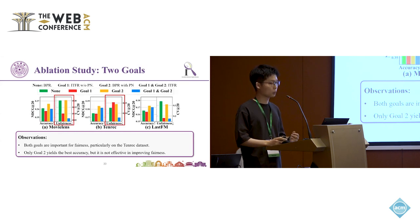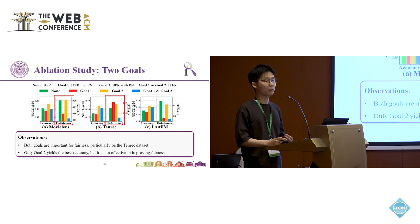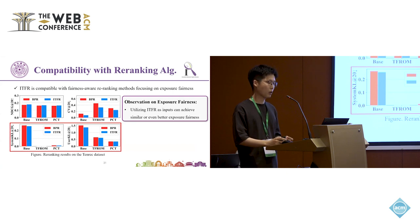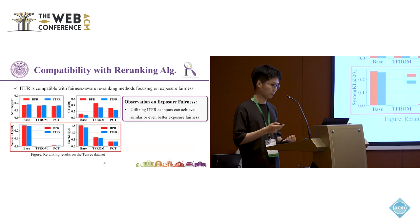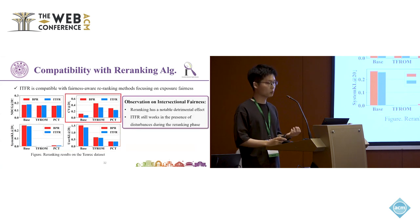We further conduct an ablation study on the two fairness scores. As shown in the figure, we can find that both scores are important for fairness, especially on the Tenrec dataset. Besides, using only the first goal shows the best accuracy but is not effective in improving fairness. As our method is applied to the ranking stage, we next verify its compatibility with fairness-aware re-ranking methods focusing on exposure fairness. As shown in the figure, using our method as input can achieve similar or even better exposure fairness than BPR, which validates the compatibility of our method. For intersectional two-sided fairness, re-ranking can significantly damage fairness, but our method still performs better when compared to BPR.